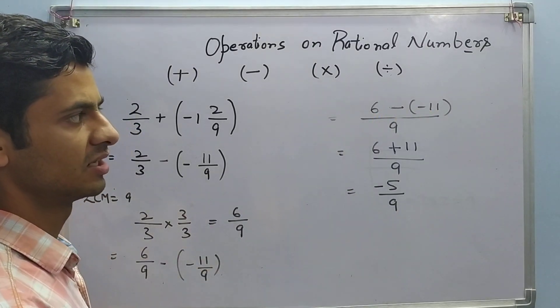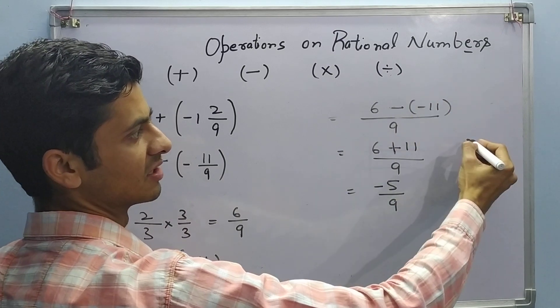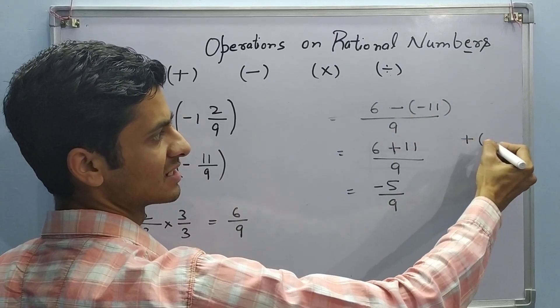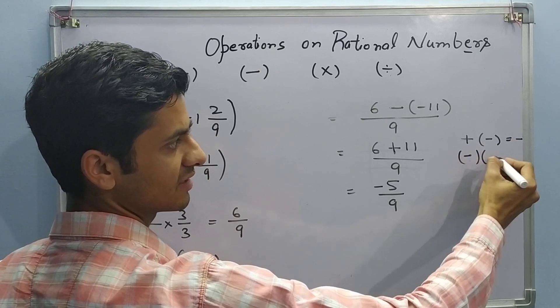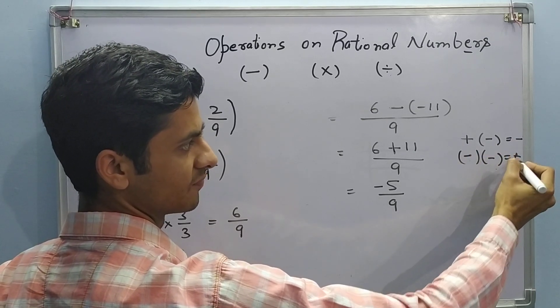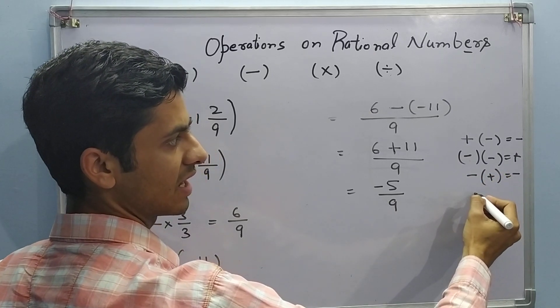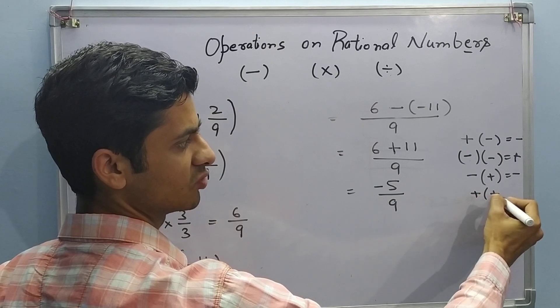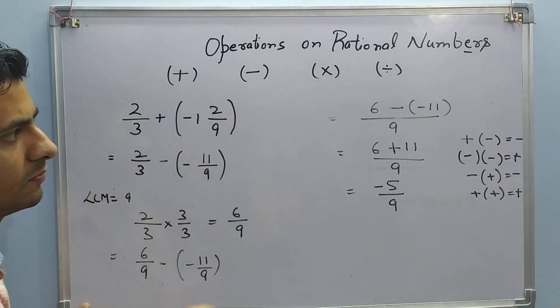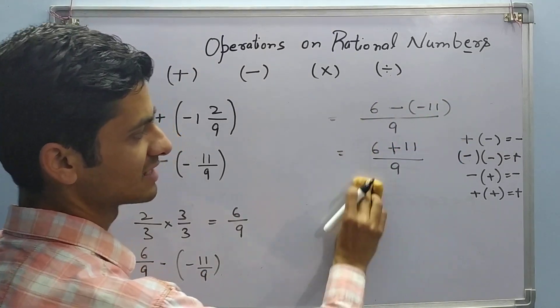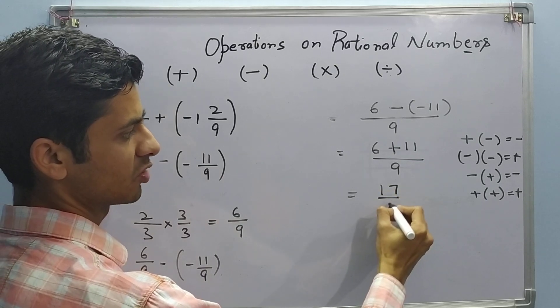This you have already learned in your previous classes. This is basically in multiplication. So if it is plus minus it is negative, negative negative it is positive, negative positive it is negative, and if both are positive then you need not be concerned it is positive only. So both are negative we will add it. Answer comes out to be 11 plus 6, 17 upon 9.